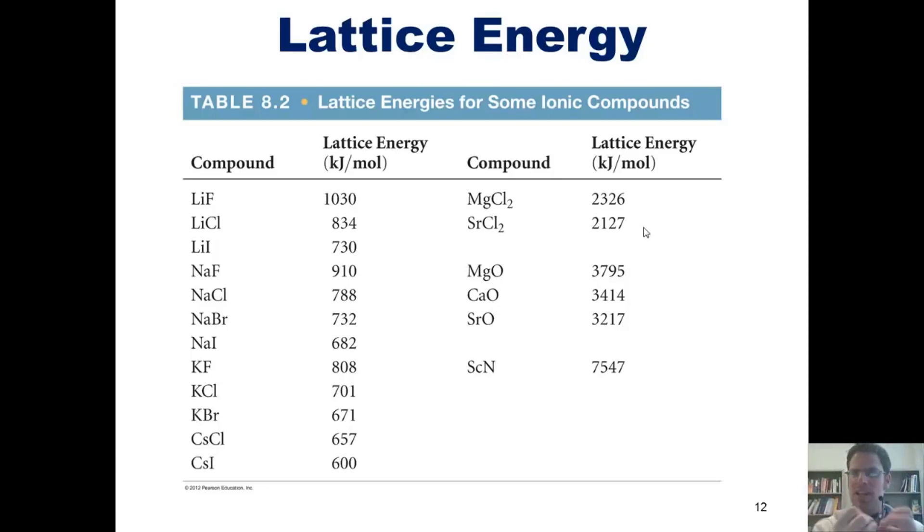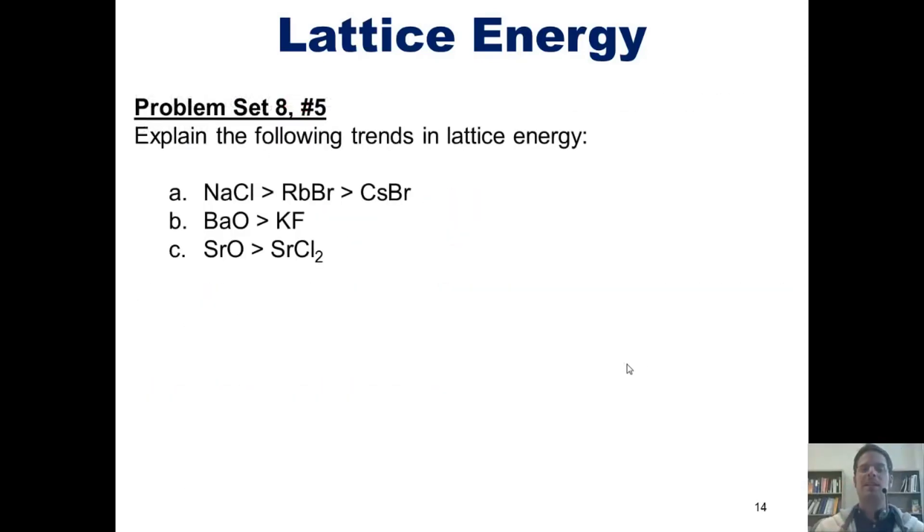Notice as we increase the charge of the anion, magnesium has a plus 2 and oxide has a minus 2. The lattice energies increase significantly. And as we go all the way up to scandium nitride where each of these ions have a plus 3 and minus 3 charge, the lattice energy is very, very huge. Trying to pull a plus 3 charge cation away from a minus 3 anion is very, very difficult to do. That brings us to this question.